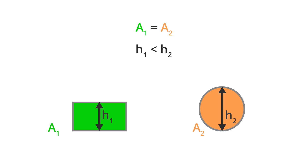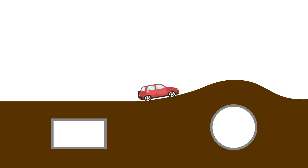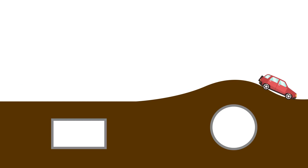However, if rectangular and circular culverts have the same cross-sectional area, the circular one will typically have a greater height. And that characteristic can give rise to other problems, such as raised road elevations.